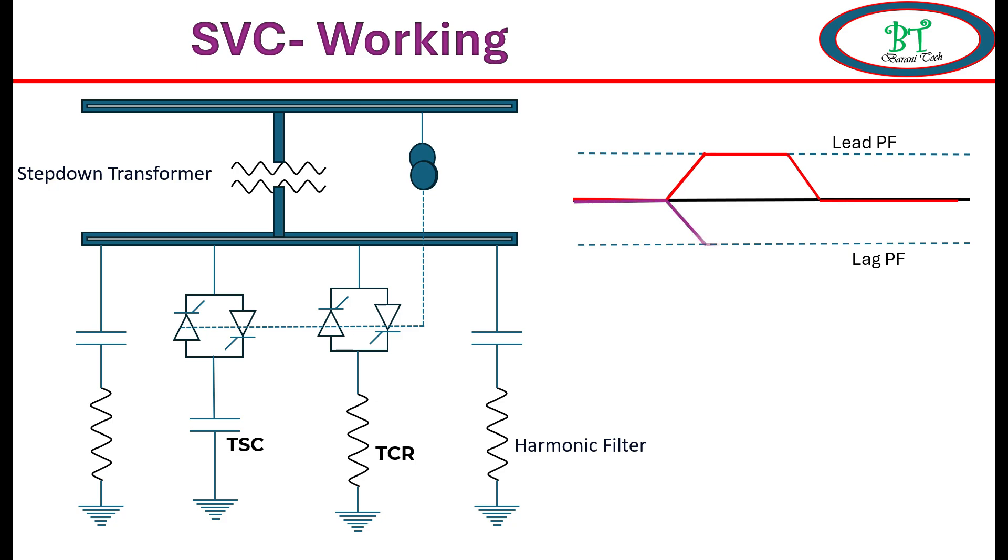On the other hand, if the power factor gets lagged due to high inductance load, during this time TSC will get on and increase the power factor. Once it comes to normal, then this switch will get turned off. From this, we can clearly understand SVC working with switching operation with the help of TCR and TSC with respect to the power factor.